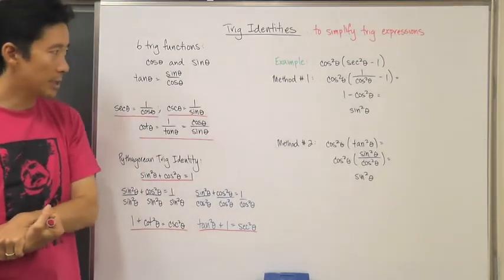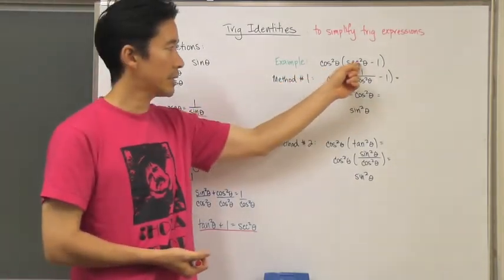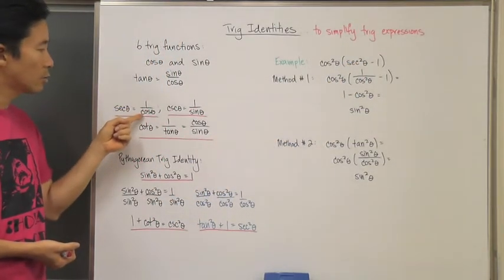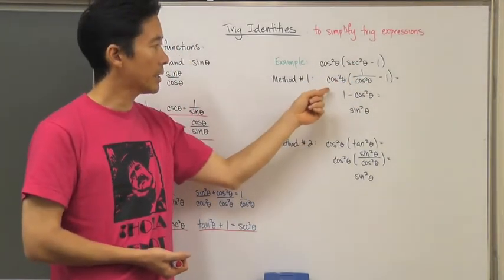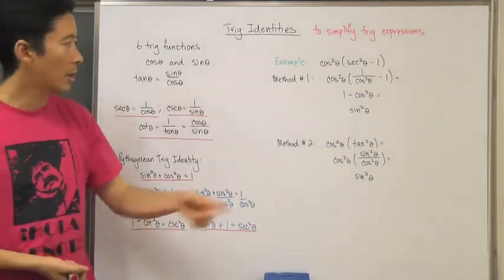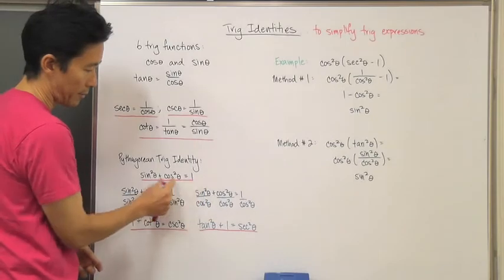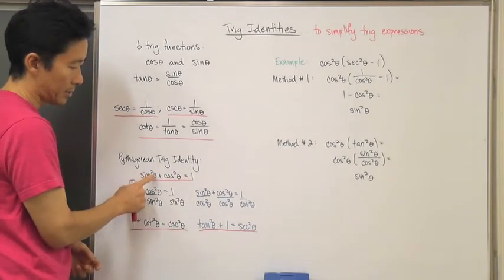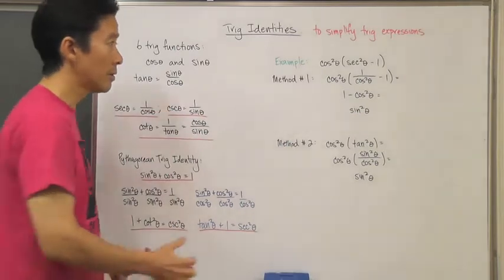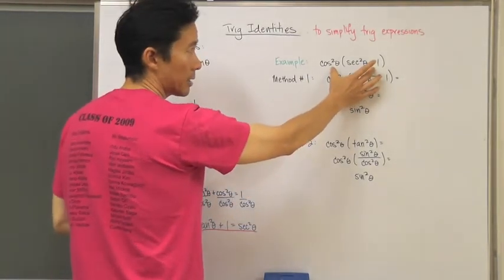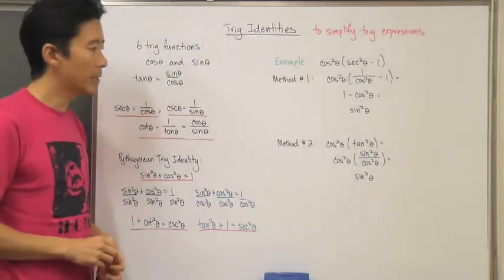Method one uses the definition of secant. Secant squared theta is the same as one over cosine squared theta, so we substitute that in and distribute. We come out with cosine squared theta times the quantity one minus cosine squared theta, which gives one minus cosine squared theta. Using the Pythagorean identity — subtracting cosine squared from both sides — we get that one minus cosine squared theta equals sine squared theta. So this complicated expression simplifies to sine squared theta.